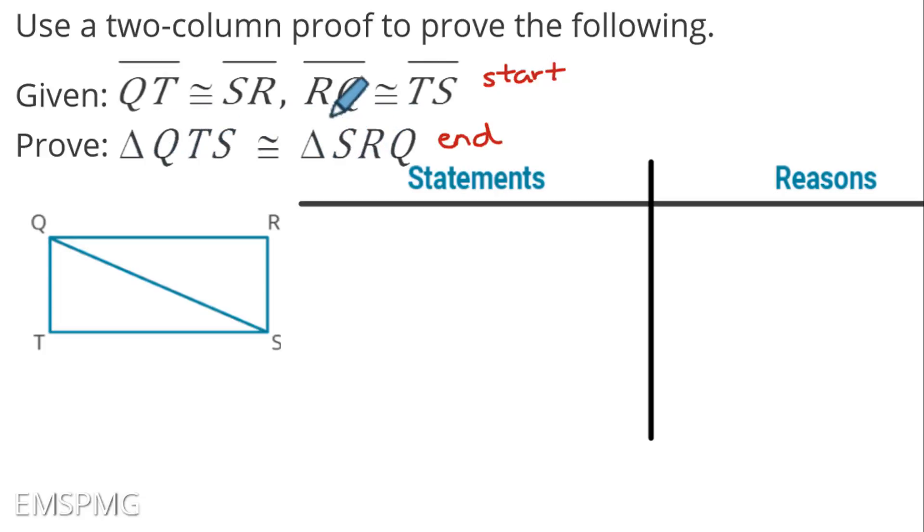So what I'm going to always start with is the information that's provided. Now, as I write something in the table, in the proof table, make sure that you are marking your diagram as well. So first things first, I'm given that QT is congruent to SR. So therefore, that is going to be the first thing I put in my table. How did I know that? Well, this was given information. So number one, it is given to me. Again, don't forget, once I've written it in my table, I'm going to mark up my diagram. So side QT is going to be congruent to side SR. And we mark sides congruent by putting one dash.